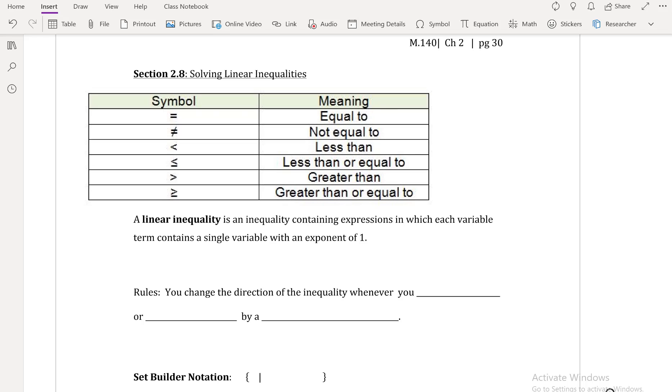So here are some familiar symbols: the equals, the not equals to, the less than, the less than or equal to, the greater than, and the greater than or equal to. A linear inequality is an equality containing expressions in which each variable term contains a single variable with an exponent of one.